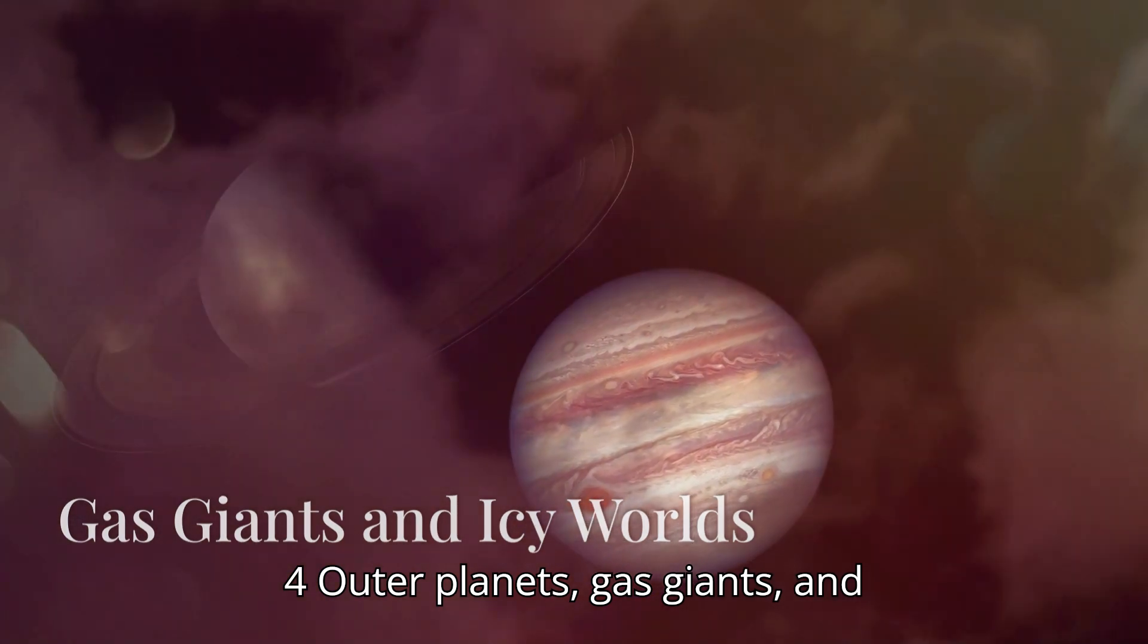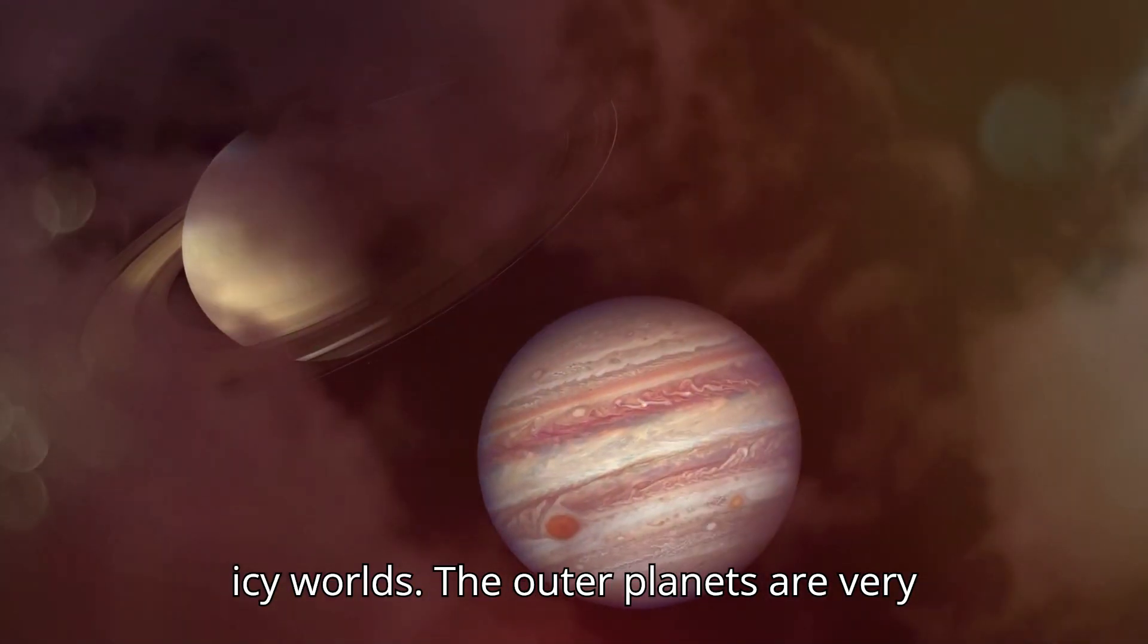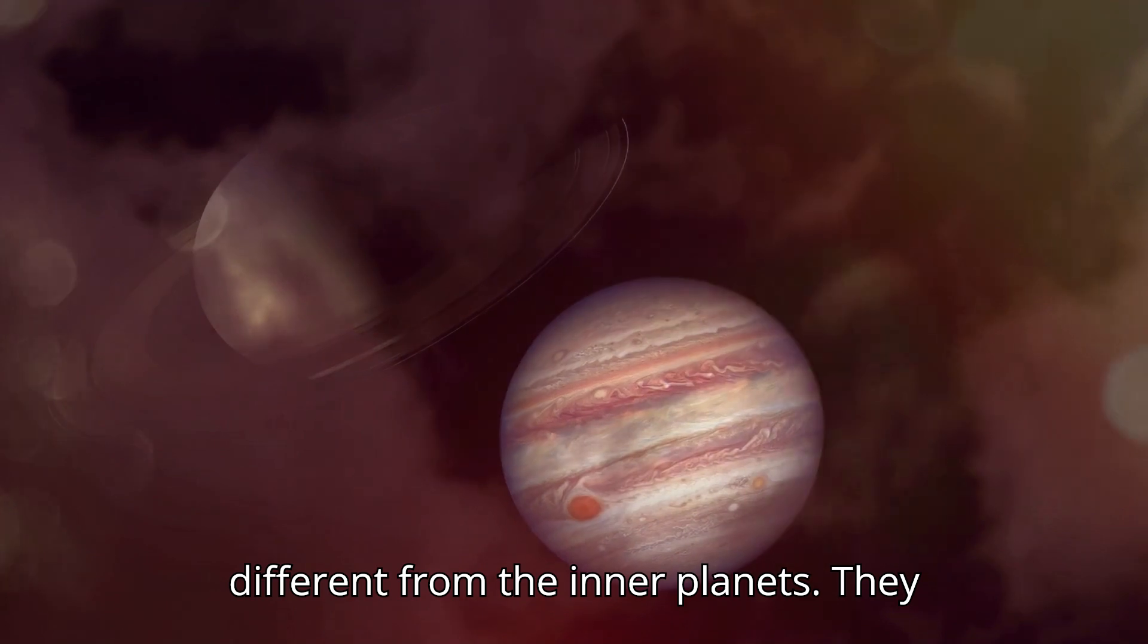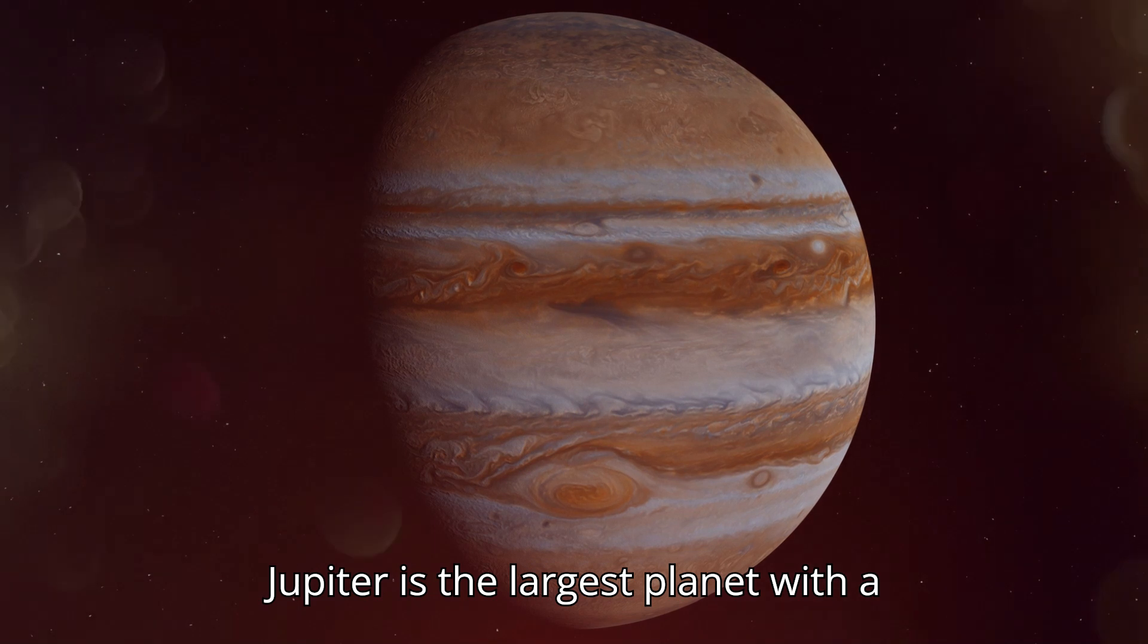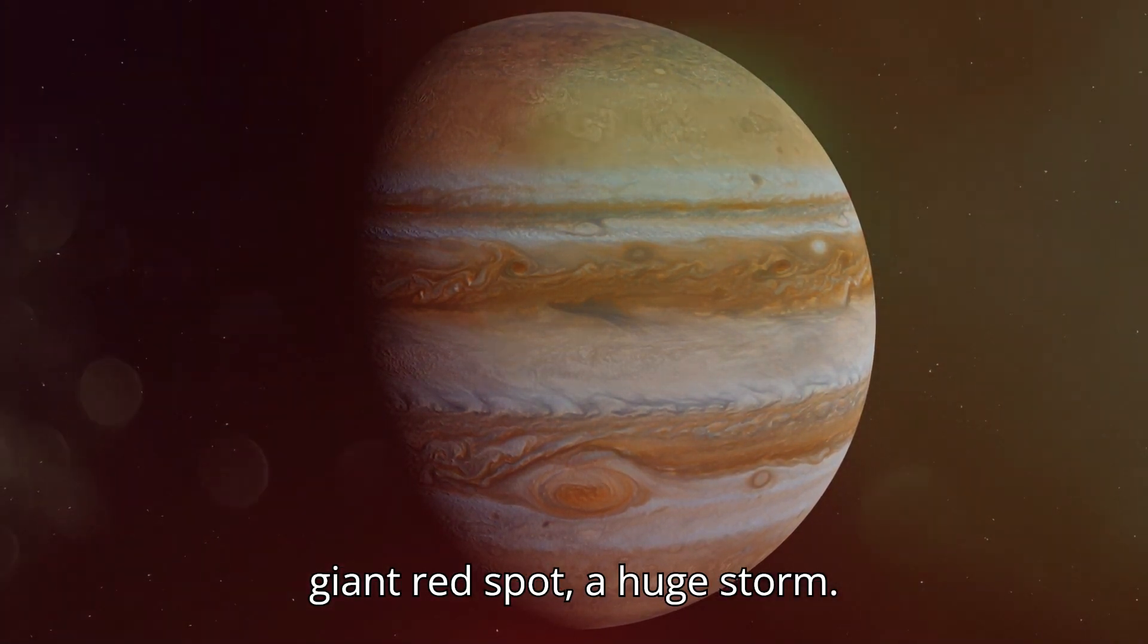Outer Planets, Gas Giants, and Icy Worlds. The outer planets are very different from the inner planets. They are much bigger and made mostly of gas. Jupiter is the largest planet with a giant red spot, a huge storm.